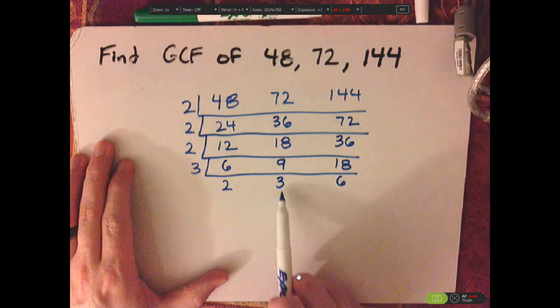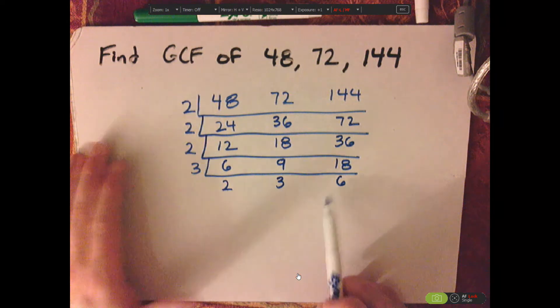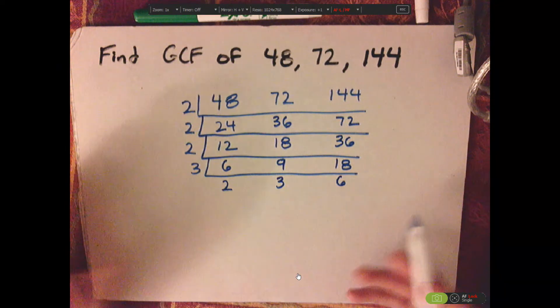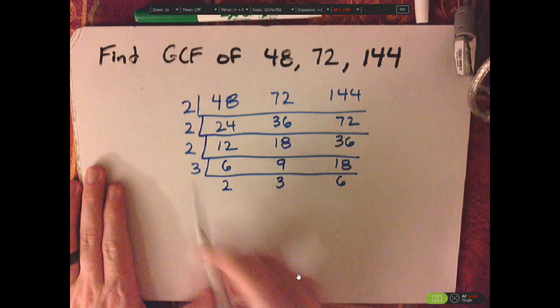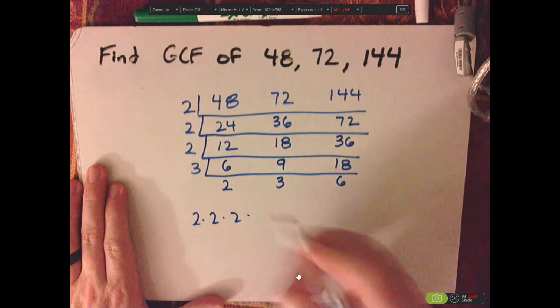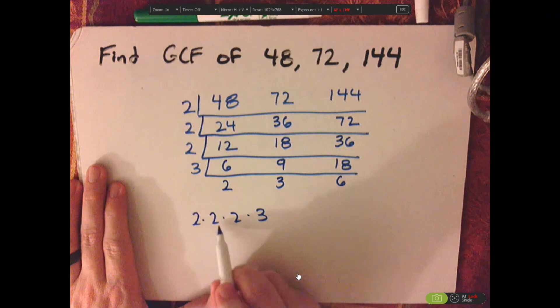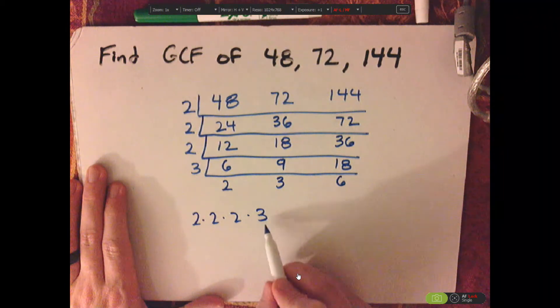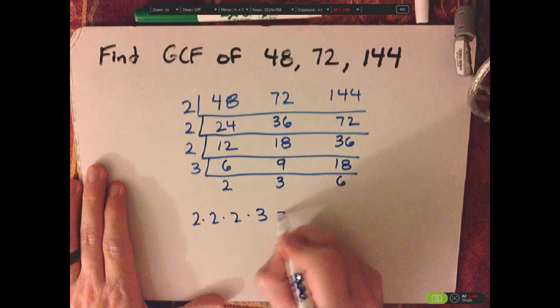Notice if I look at two, three, and six, the GCF of those is one, so then I would stop. All these are common factors, so then you would take two times two times two times three. Two times two is four, times another two is eight, times three is 24.